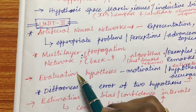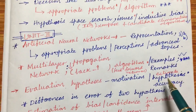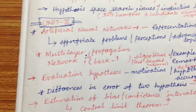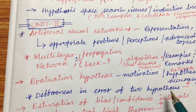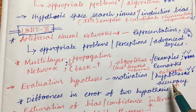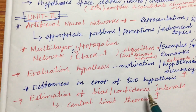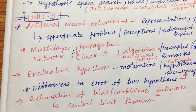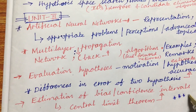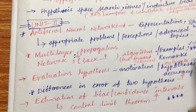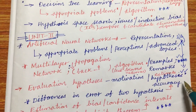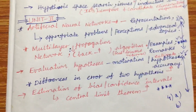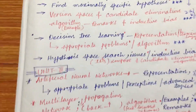Evaluating hypothesis — motivation, estimating hypothesis accuracy, and differences in error between two hypotheses — is also a very important question asked several times. Estimation of bias and confidence intervals, as well as the central limit theorem related to confidence intervals, are also very important and frequently asked. From these topics you can expect the third and fourth questions, with combinations of 4a and 4b.